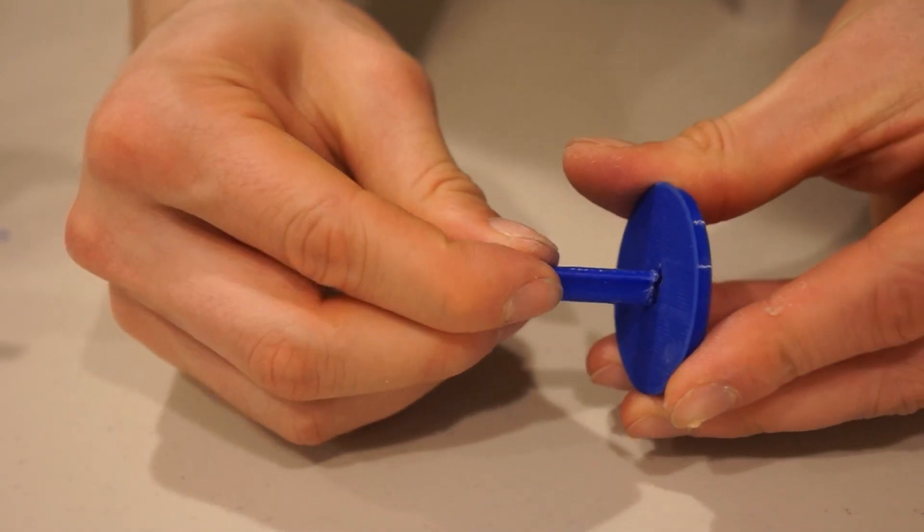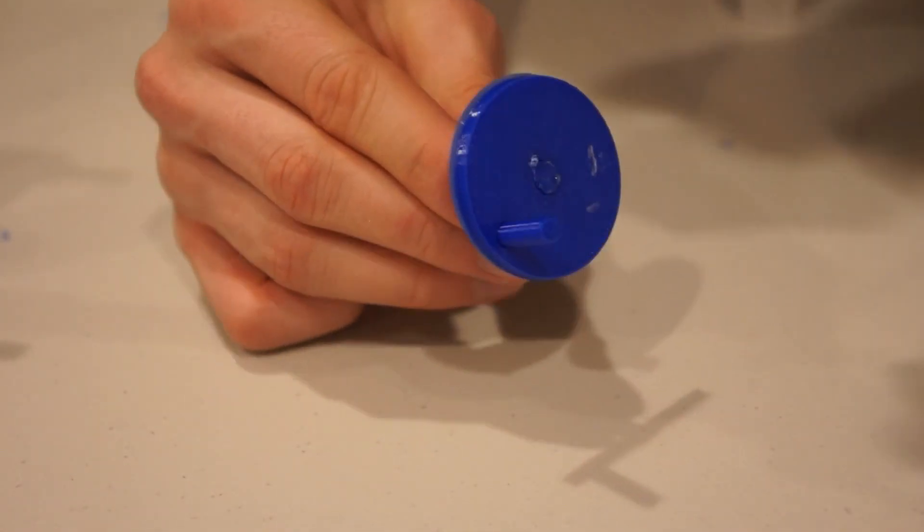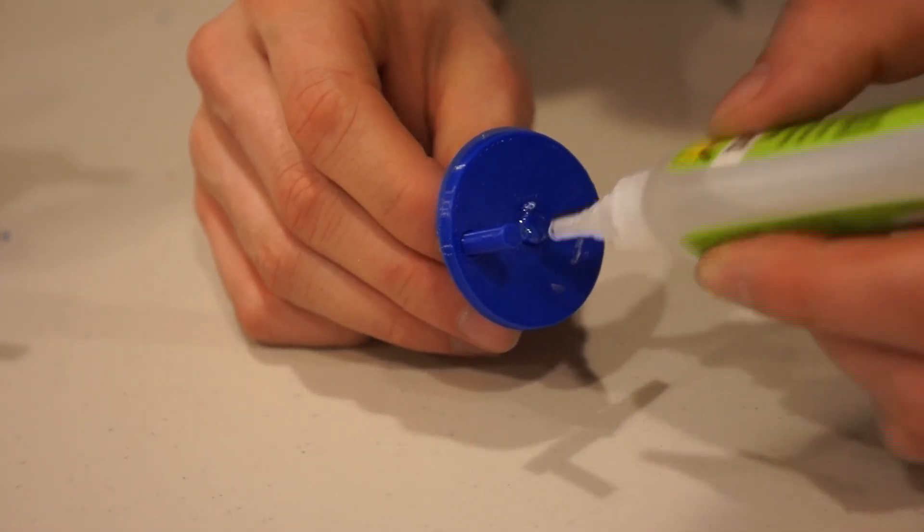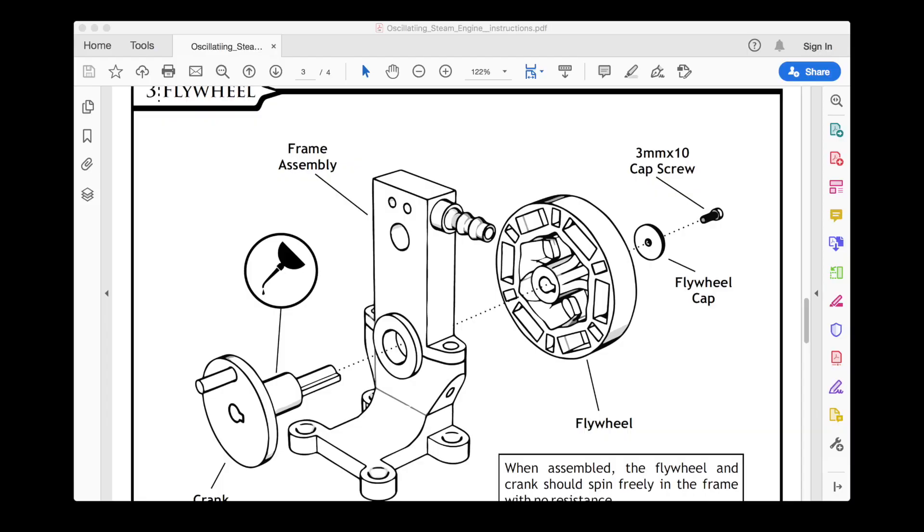The next step is to connect the pieces of the crankshaft. Easy enough, we can just glue those together. Then we want to thread the crankshaft through the bushings and affix it to the flywheel.